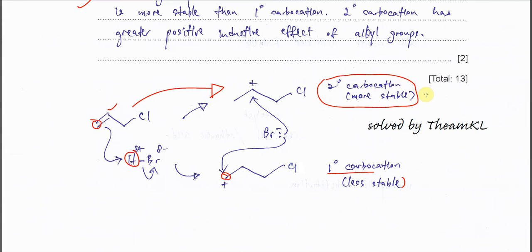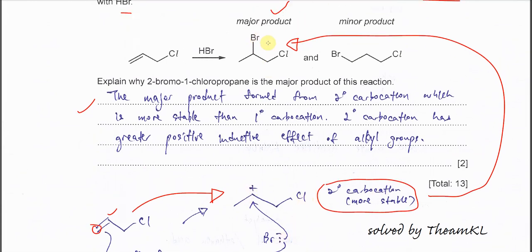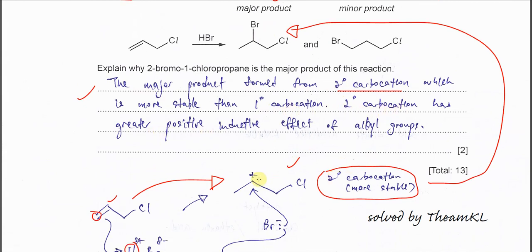Therefore, this carbocation will form the major product. After the bromide attacks, you will form this major product. The major product is formed from the secondary carbocation, which is more stable than the primary carbocation. Why? Because the secondary carbocation has more alkyl groups. It can give a greater positive inductive effect. That's all for this question. Thank you.